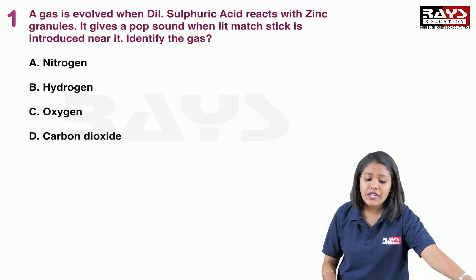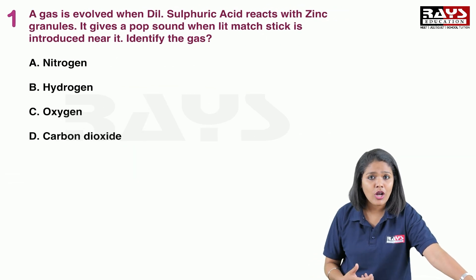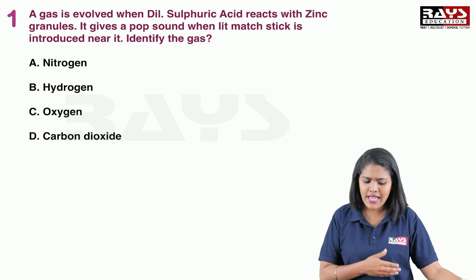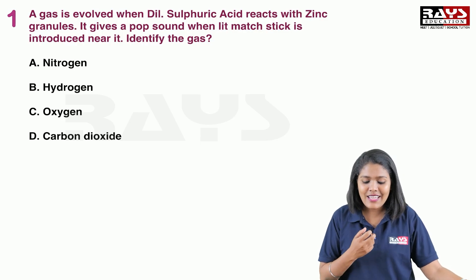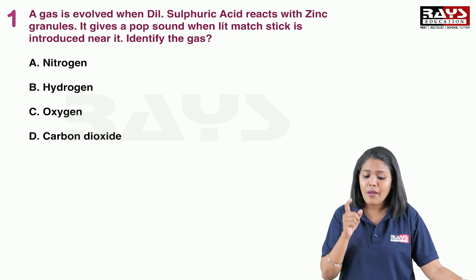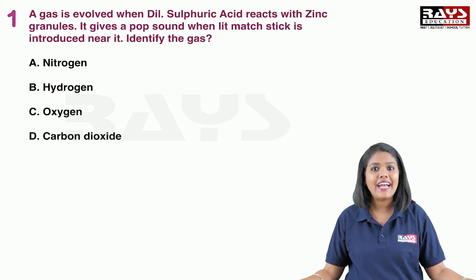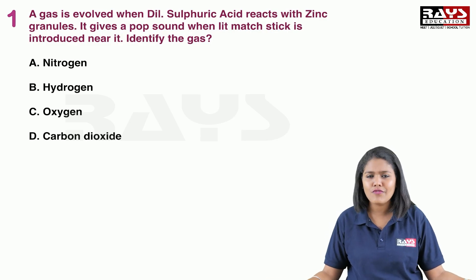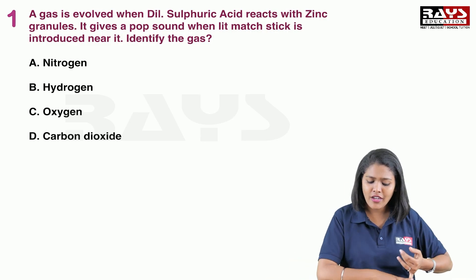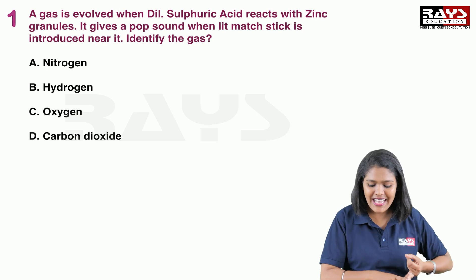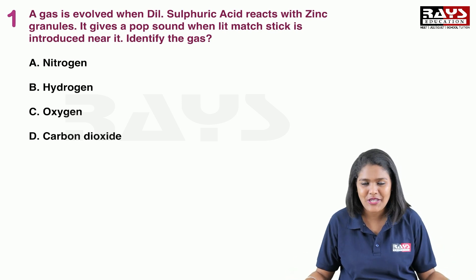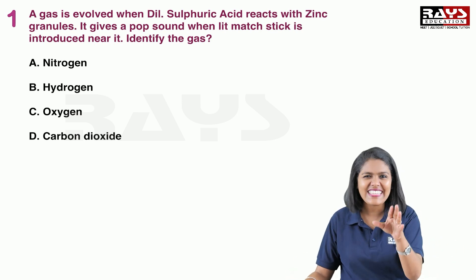A gas is evolved when dilute sulfuric acid reacts with zinc granules, and it is given that it produces a pop sound when a lighted matchstick is introduced near it. Identify the gas. Four options are given: nitrogen gas, hydrogen gas, oxygen gas, and carbon dioxide gas. Which is the right answer?